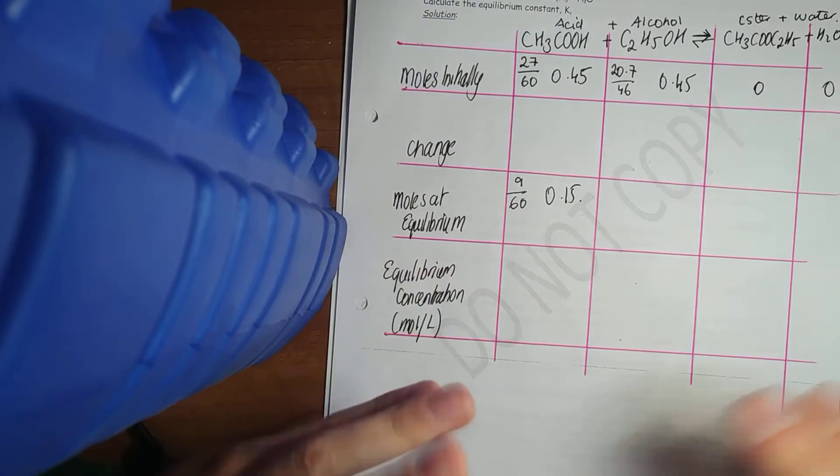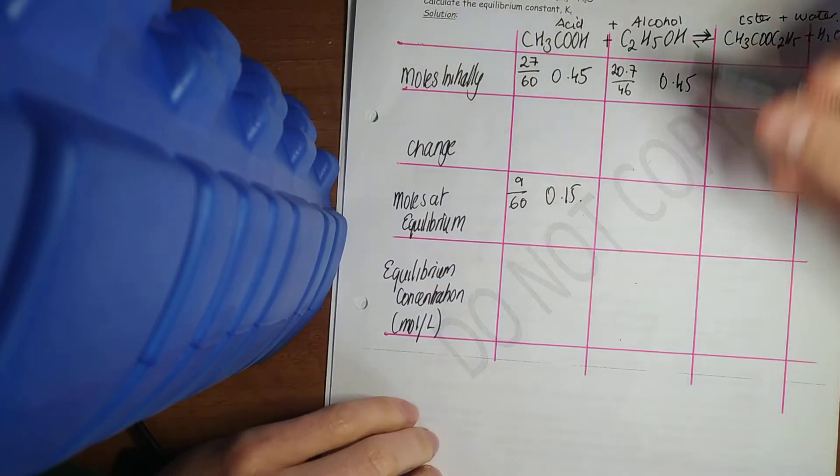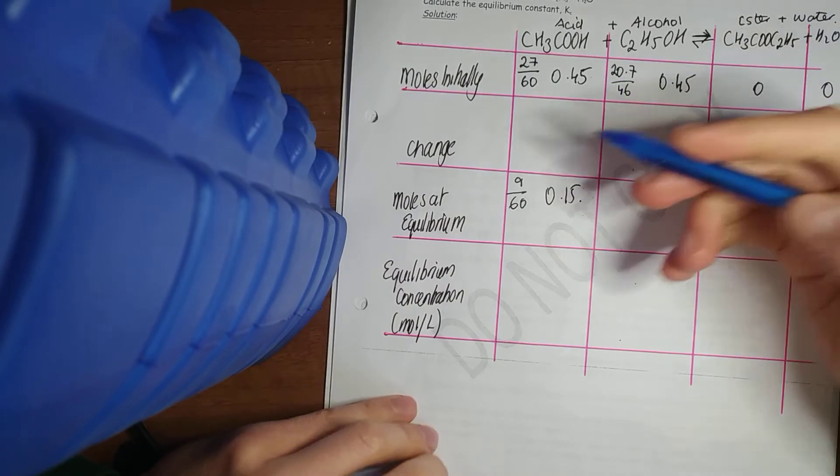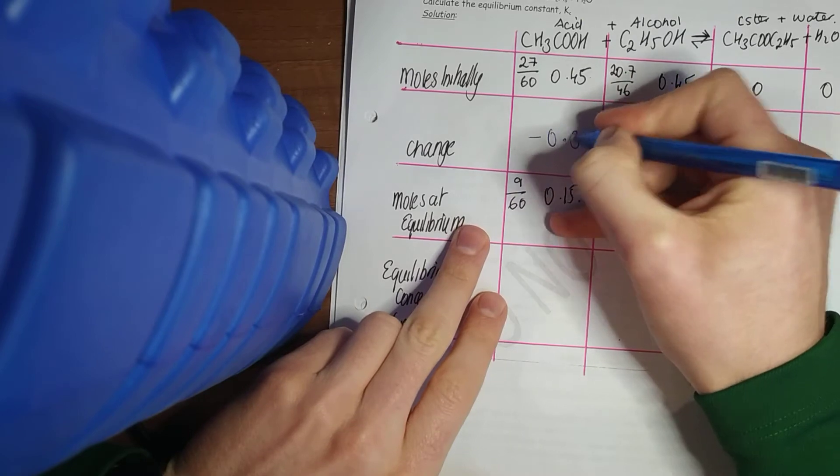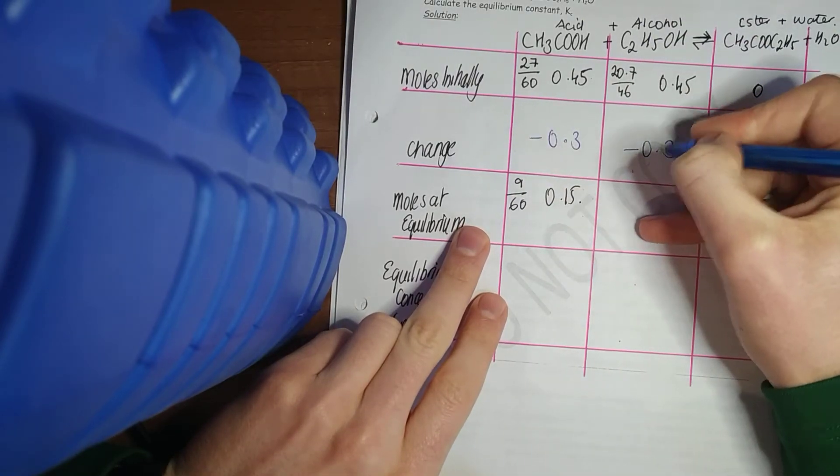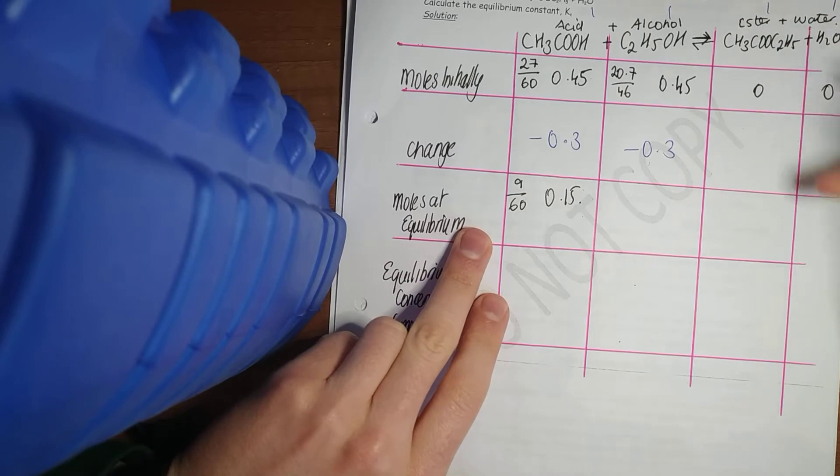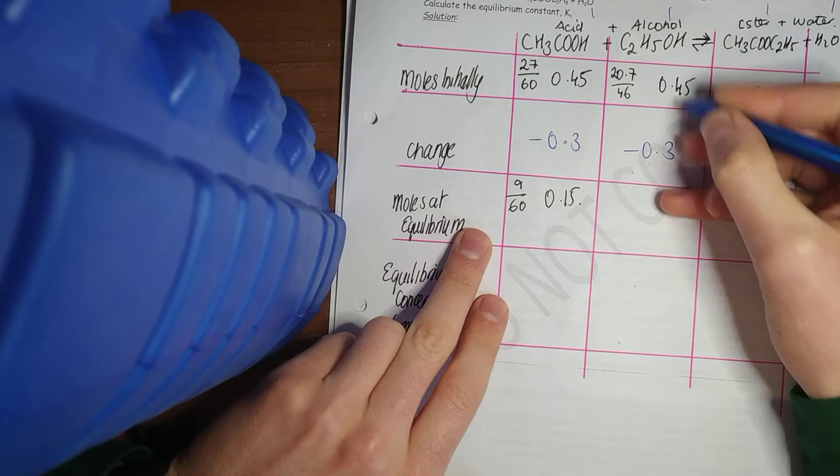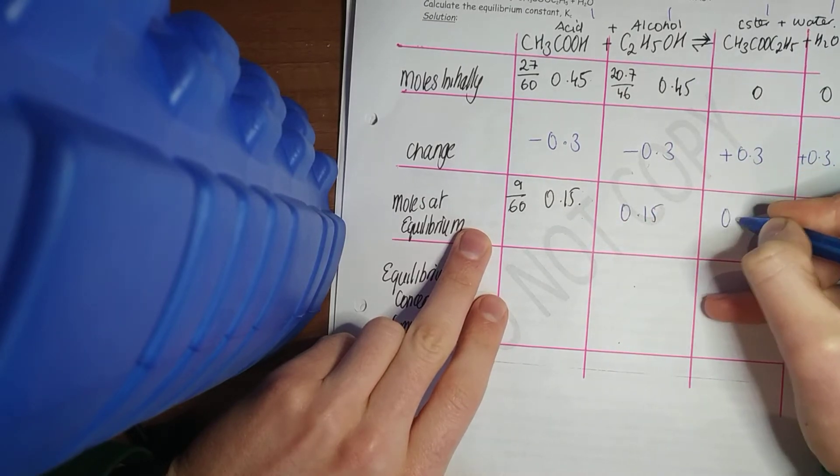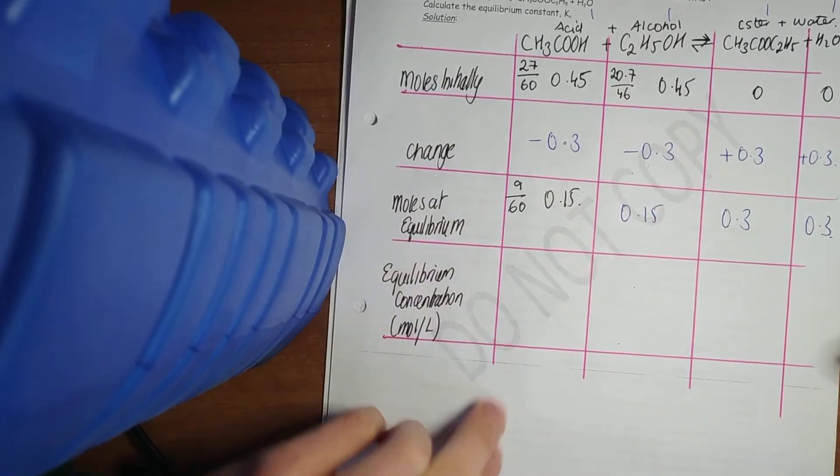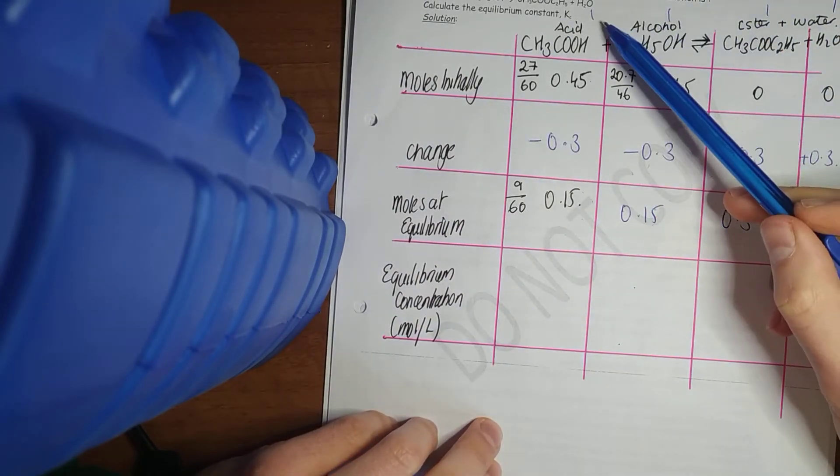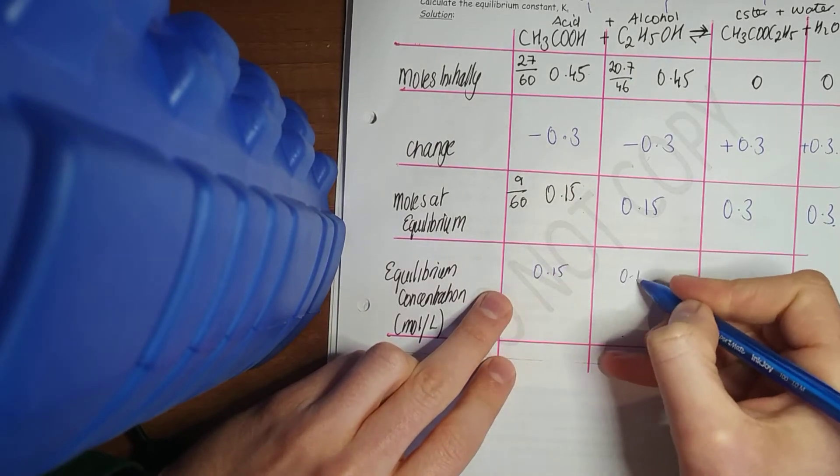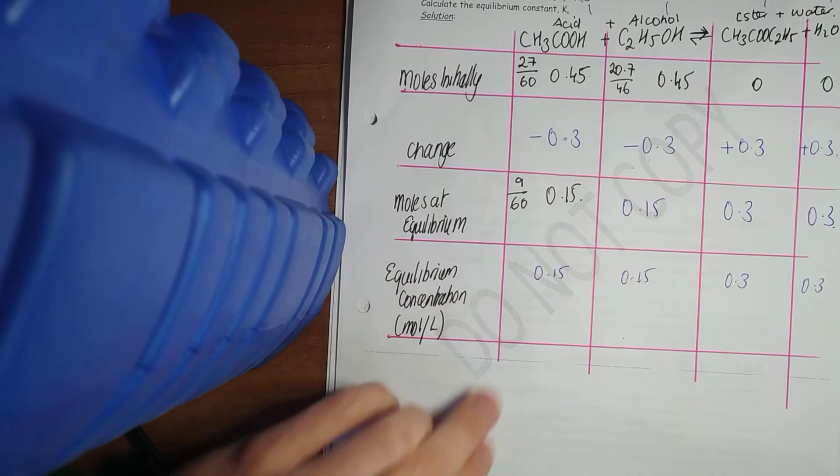Now that's enough information to work out KC. Because from this here, I can work out the change. What happened to my concentration reactants? I went down. The difference in those is down 0.3. Your reactants are both going to decrease. And as it's in the ratio 1 to 1 to 1 to 1, my products are going to increase by plus 0.3. So 0.45 to 0.15 is 0.3. And now have they given me a size of a container? No, they haven't. So nothing to worry about. Just go straight down. 0.15, 0.15, 0.3, 0.3.